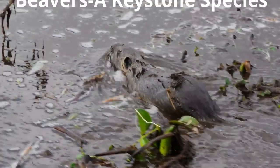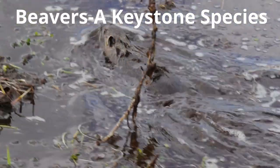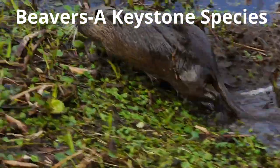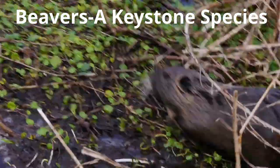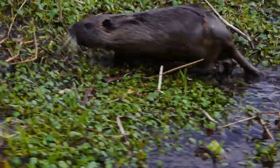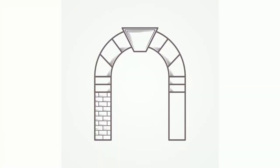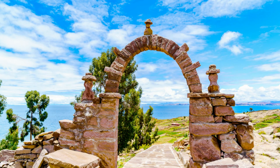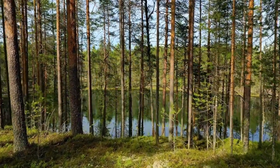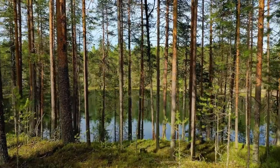A keystone species is a species that has a large impact on their habitat given their size and numbers. Their daily activities impact all kinds of other species. The name is derived from a keystone, which is a central stone at the summit of an arch that locks the whole together. In reality, a keystone species locks the entire ecosystem together.